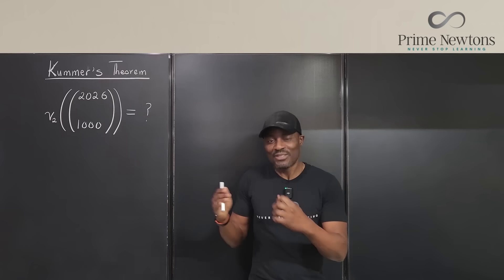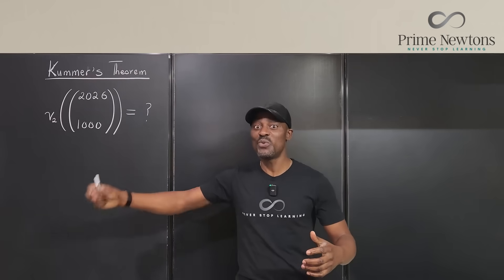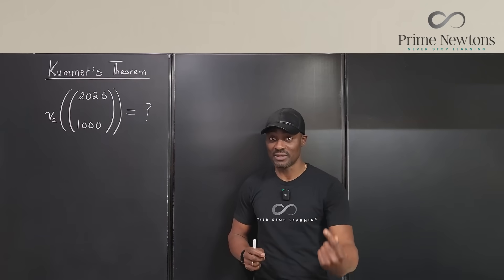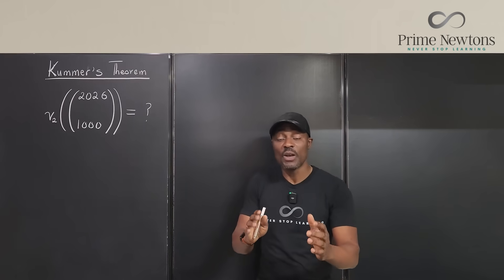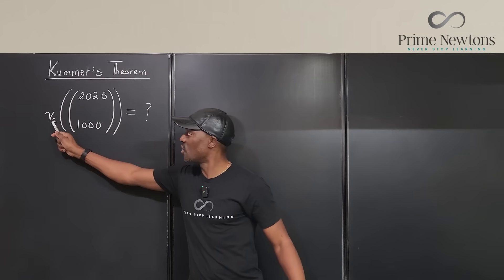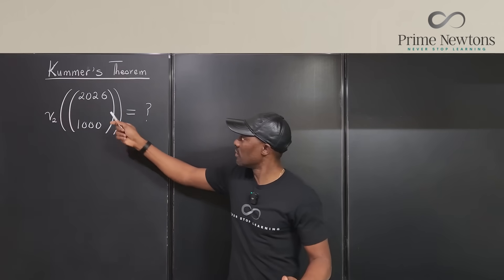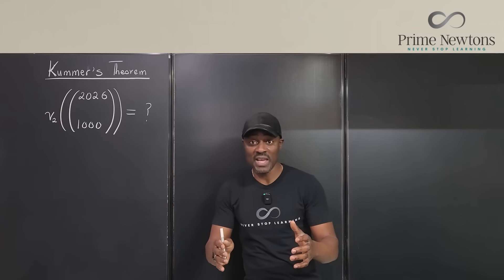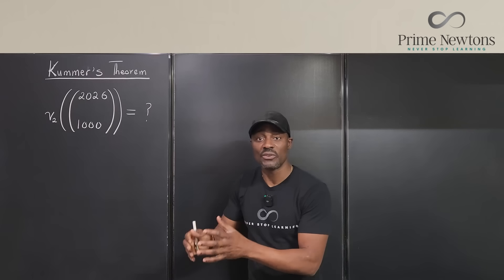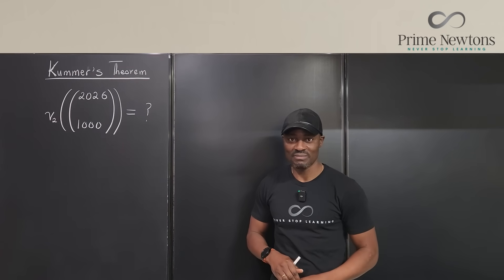However, Kummer's theorem, the thing generally about theorems is they make very complicated problems easy to solve. You don't have to go through the proof, you just use it as a tool to answer the question. So what is this question we've been asked to find an answer to? Well, what it says is find the highest exponent of two that divides this number. What is this number? This is what in combinatorics you call 2026 combination 1000. Or you say, in how many ways can you choose 1000 objects out of 2026? Now that you know what the question is, let's talk about Kummer's theorem. Let's get into the video.